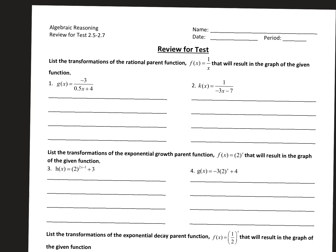We're going to do this step-by-step. So the first one: that negative right in front of the 3 — don't include it with the 3. That is a reflection over the x-axis, a vertical reflection over the x-axis. And then that 3 right there, that is a vertical stretch by a factor of 3.